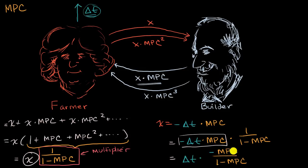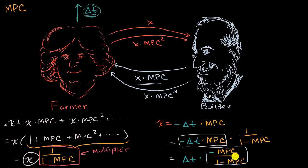This expression, though it seems fancy and technical, is simply saying: if you take money away from the farmer, this is the effect on her initial spend, and then you get this multiplier on the taxes. The negative sign means that a positive tax has a decreasing effect on output because of the multiplier.